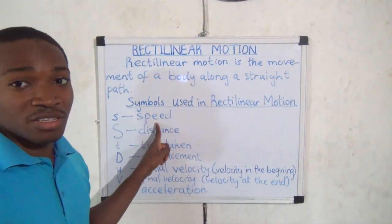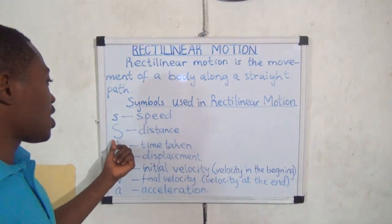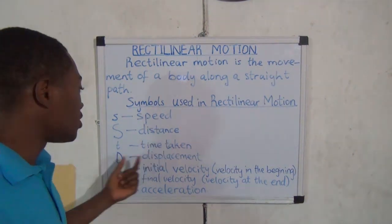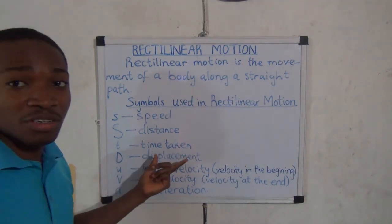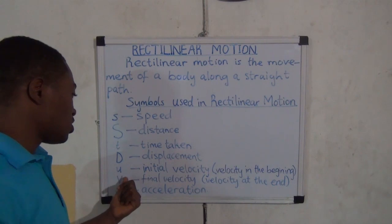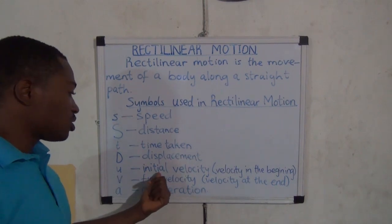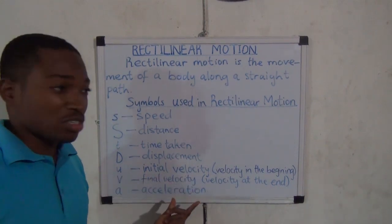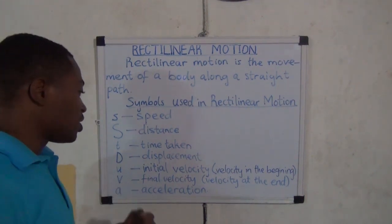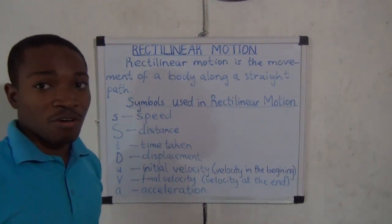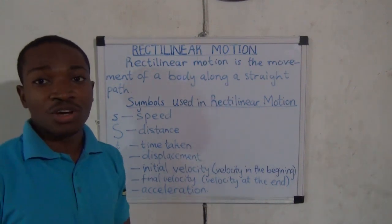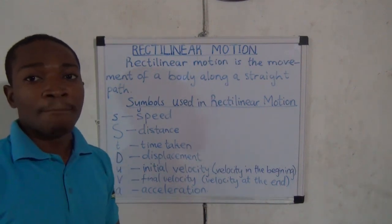The small letter s represents speed. The capital letter S represents the distance traveled — the distance covered. T is the time taken. Capital letter D is displacement. The small letter u is initial velocity, or velocity at the beginning. The small letter v is the final velocity, or velocity at the end of motion. And a is the acceleration of the particle.